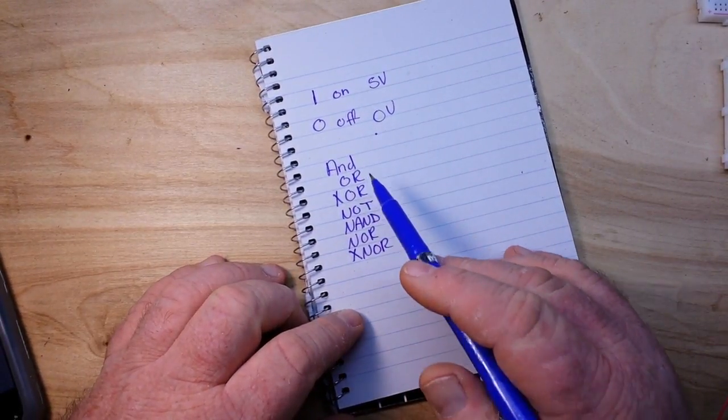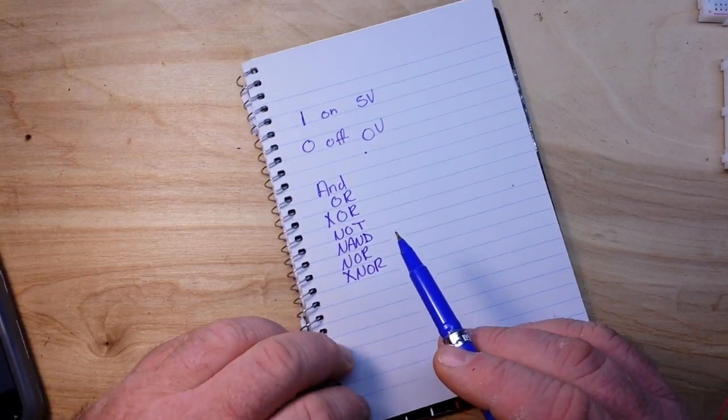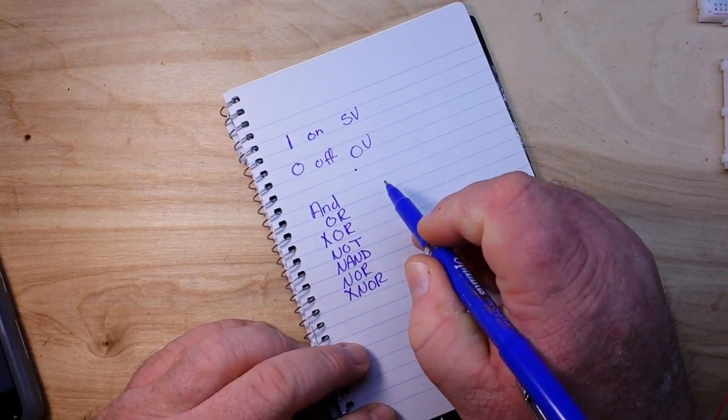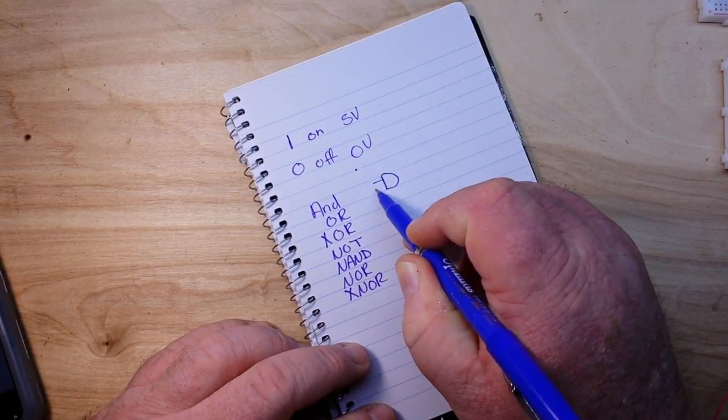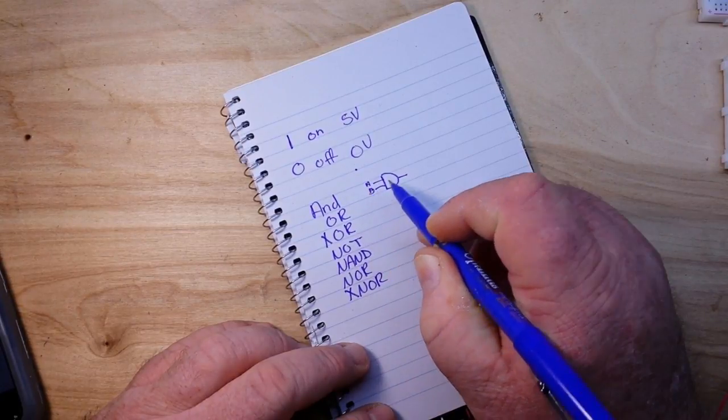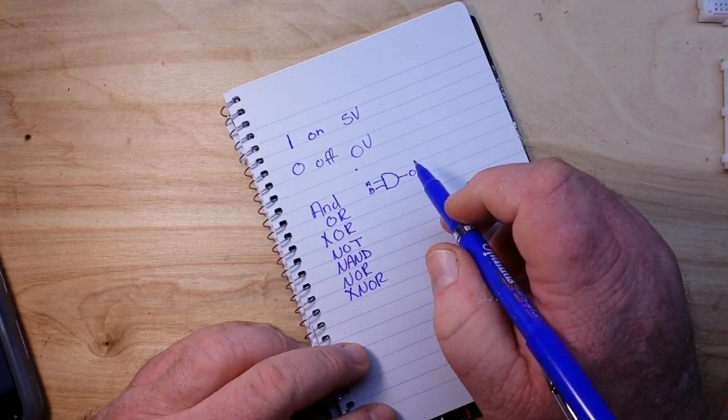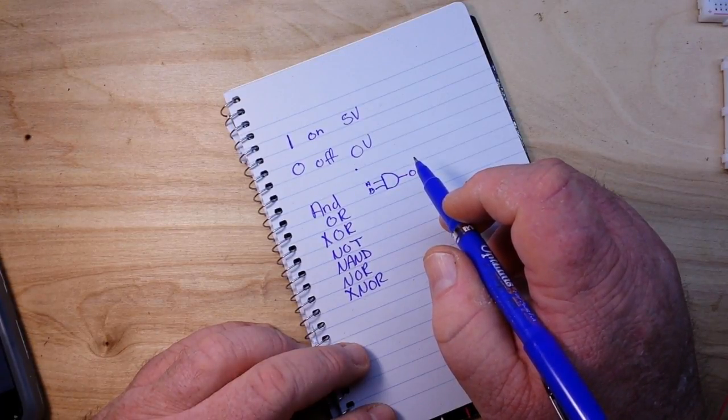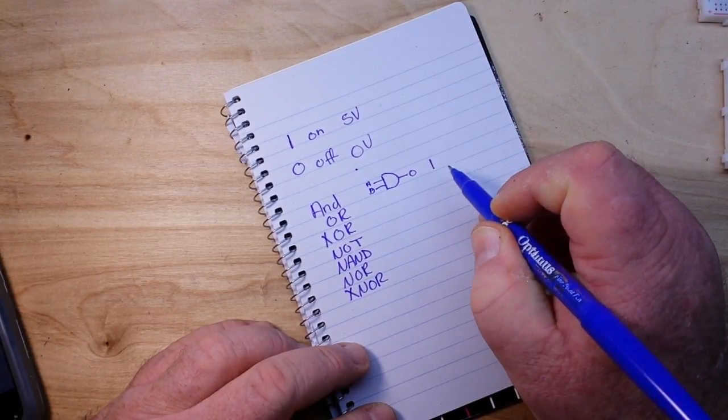All digital logic is basically built up of these seven gates. The first one is the AND gate and it's drawn like this. This is your A input, your B input, and your output. The way it works: the output is true, a 1, if both inputs are true.